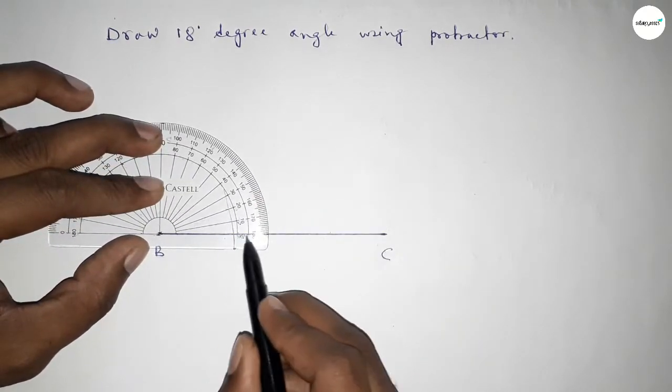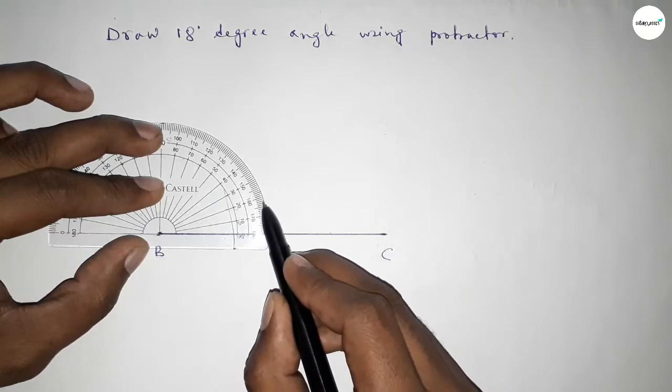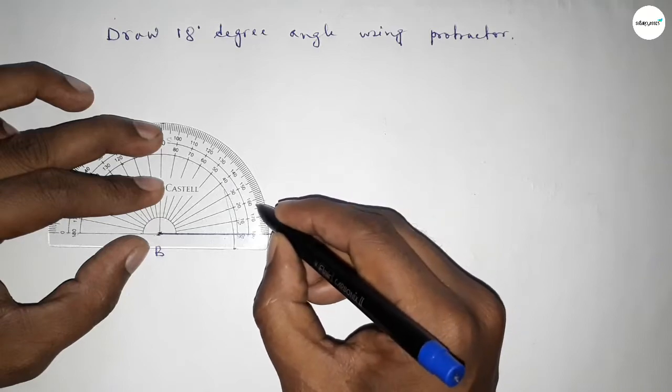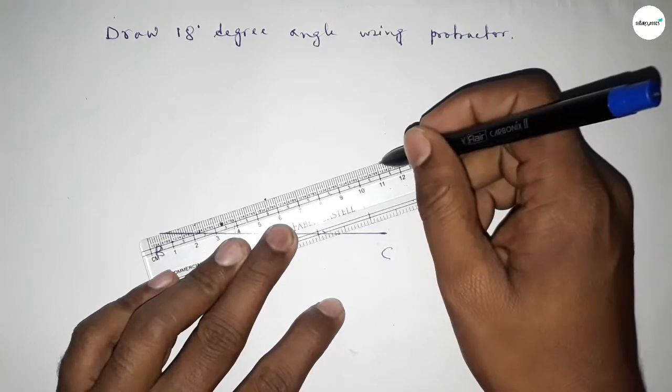And counting the angle, so starting 0, 10, 15, 16, 17, 18. So this is 18 degrees. Now joining this side.